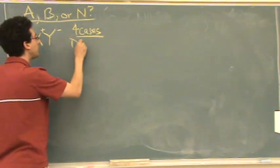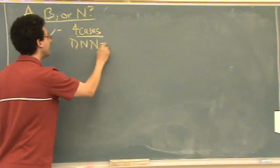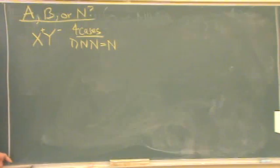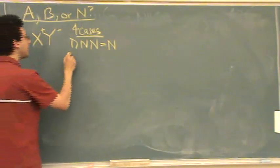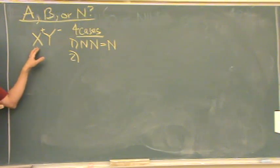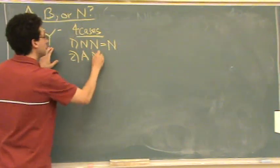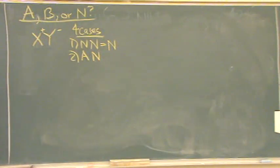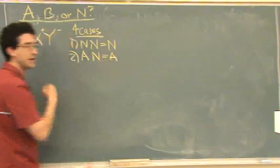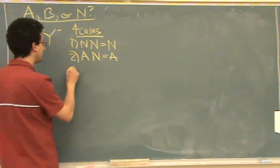Case one: X is neutral and Y is neutral. If they're both neutral, the overall molecule is going to be neutral. Case two: X is acidic and Y is neutral. An acid plus a neutral is acidic, because the neutral does nothing — it has no power as far as acidity or basicity.